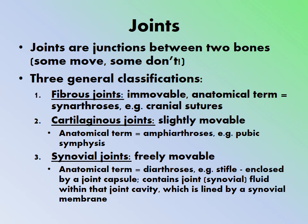Synovial joints are very freely movable — the anatomical term is diarthrosis. Examples include the stifle, elbow, and knees. These joints are enclosed by a joint capsule containing synovial fluid and are lined by a synovial membrane, which produces the synovial fluid. These are the most mobile of all joint types.